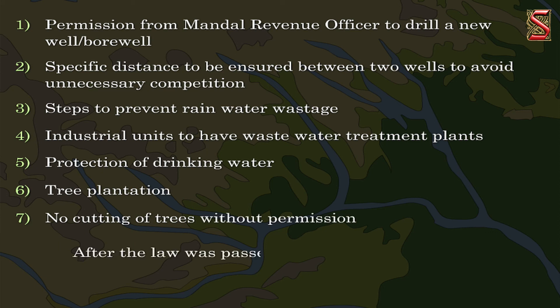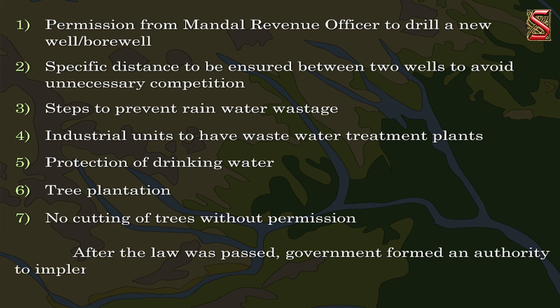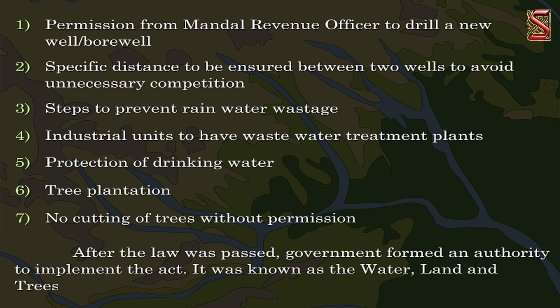After the law was passed, the government formed an authority to implement the act. It was known as the Water, Land and Trees Protection Authority. To implement any act, various departments of the government should work together. The topic was interesting — till we meet next time with the new module, take care and happy learning.